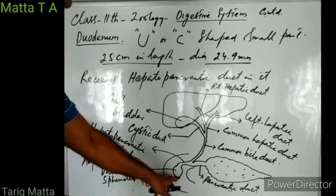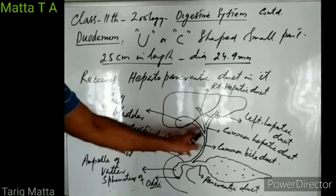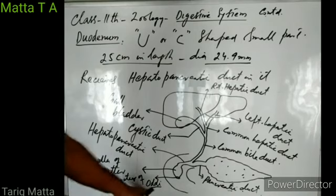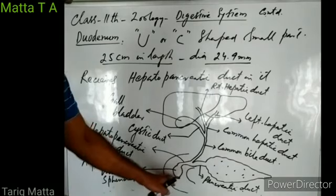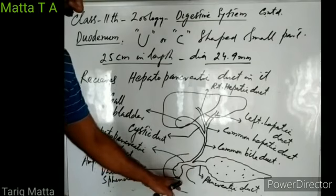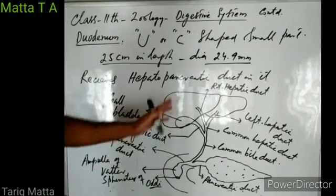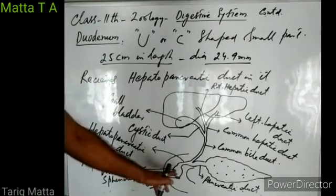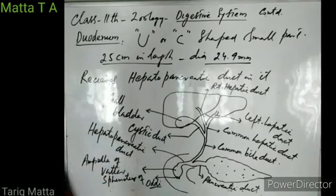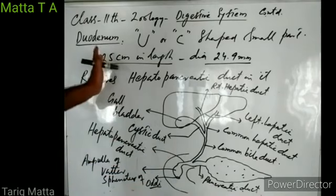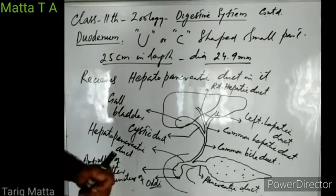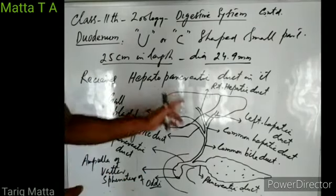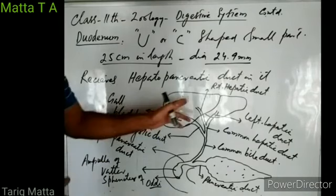This circular band of muscles regulates the flow of bile and pancreatic juice into the duodenum. This sphincter muscle is known as the sphincter of Oddi. So through the sphincter of Oddi, bile and pancreatic juice is released into the duodenum — from liver and pancreas, through the hepatopancreatic duct, through the ampulla of Vater, and then through the sphincter of Oddi.